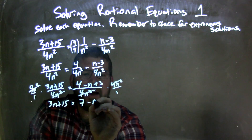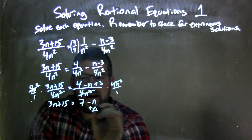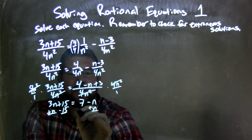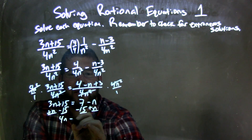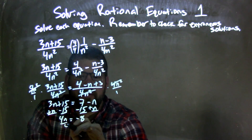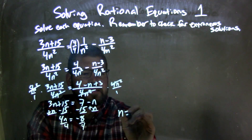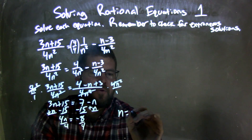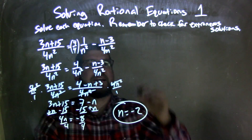so 7 minus n on the right. Let's bring our n's together, so I add an n to both sides, and I subtract 15 from both sides. That leaves me with 4n on the left and negative 8 on the right, so when I divide by 4 on both sides, I'm left with my final answer, which is n equals negative 8 divided by 4, which is negative 2. So now I need to check that.